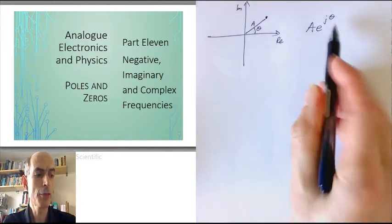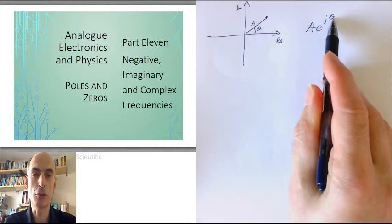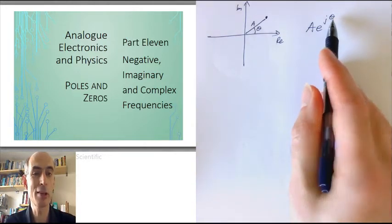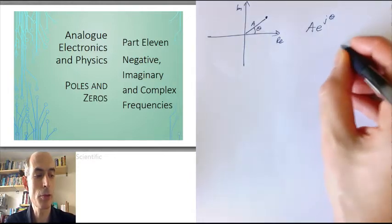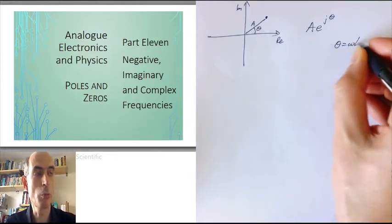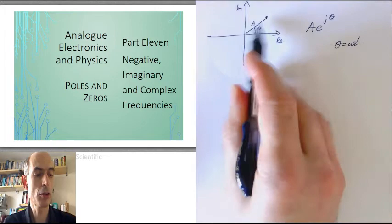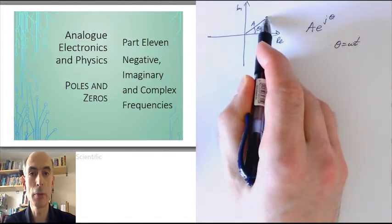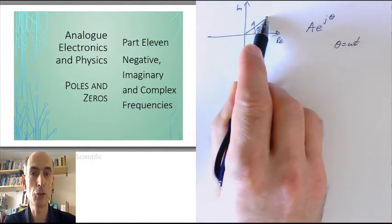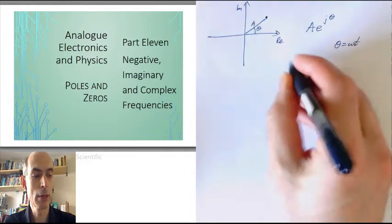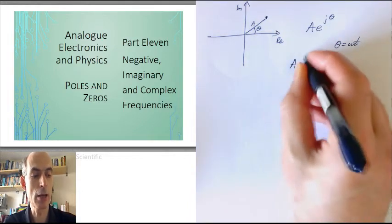Now, if theta is not constant but is perhaps a linear function of time, so that theta equals omega t, we could write this complex number, which would now be moving as its position as a function of time, as a e to the j omega t.